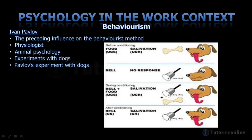Pavlov found that dogs learned to associate food with other stimuli that were presented at the same time, as shown in the sketches. This could also happen with things such as light, sound, or the footsteps of a person. They eventually responded in the same way to these stimuli even in the absence of food — the same response was elicited by stimuli the dog had learned to associate with food.